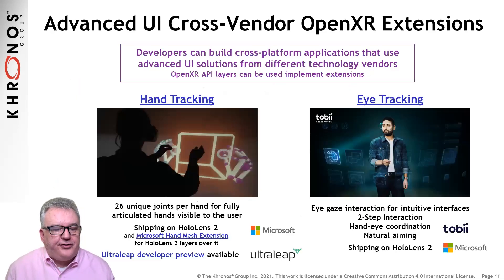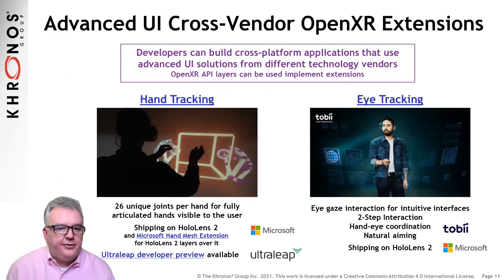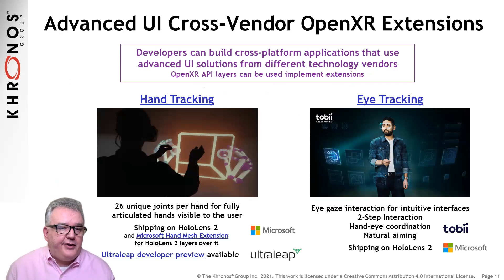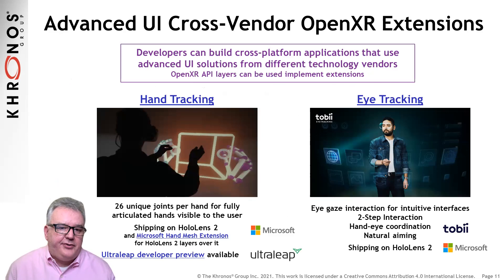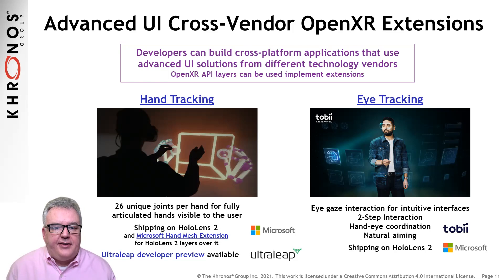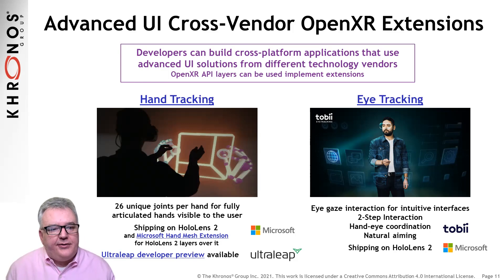As with all Kronos standards, OpenXR is extensible and there are already cross-vendor hand and eye tracking extensions for building advanced user interfaces. The hand tracking extension defines a consistent hand articulation model shipping on the HoloLens 2, and UltraLeap has a developer preview. The eye tracking extension, developed by sensor vendors including Tobii, will enable natural eye gaze interactions and is also shipping on HoloLens 2. Looking forward, the OpenXR working group is defining cross-vendor extensions for accessing spatial information about the user's real-world surroundings to enable richer portable AR experiences, and expanding haptics and body tracking support.